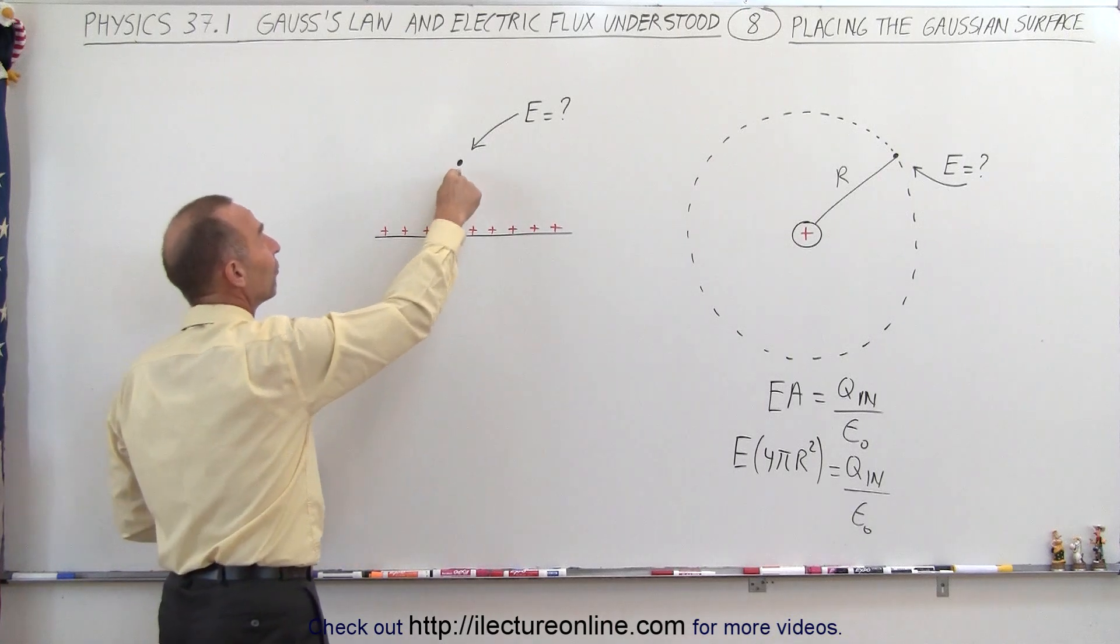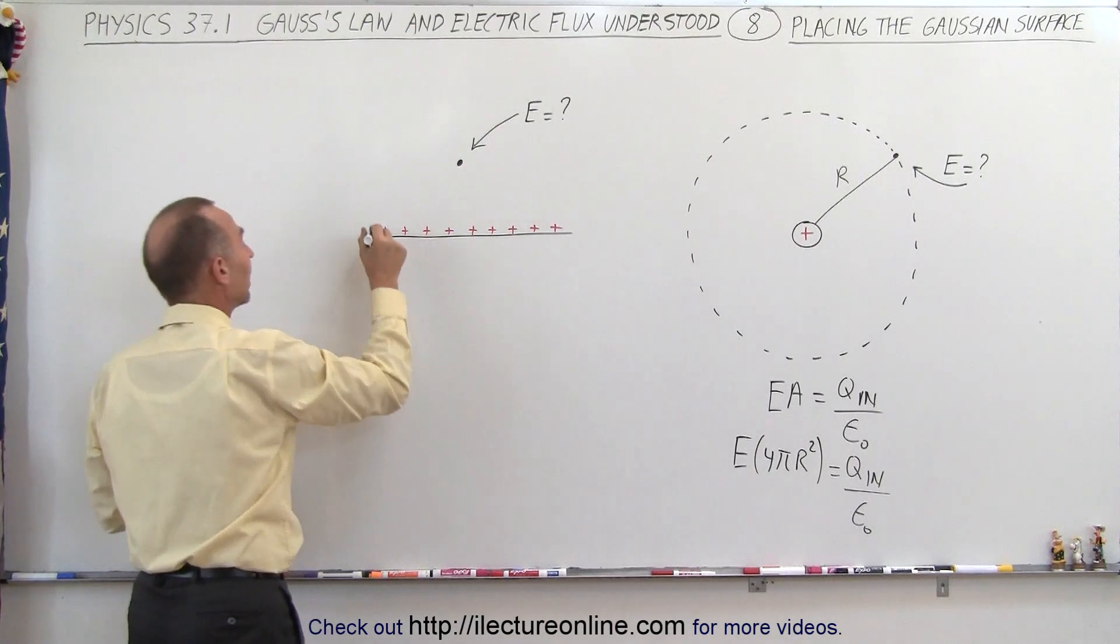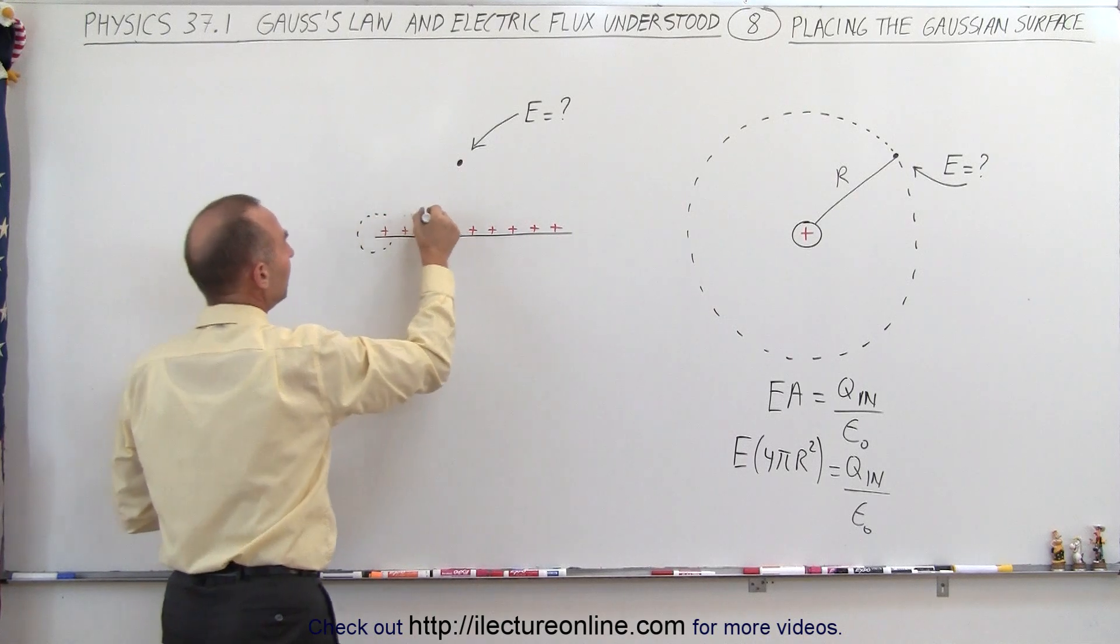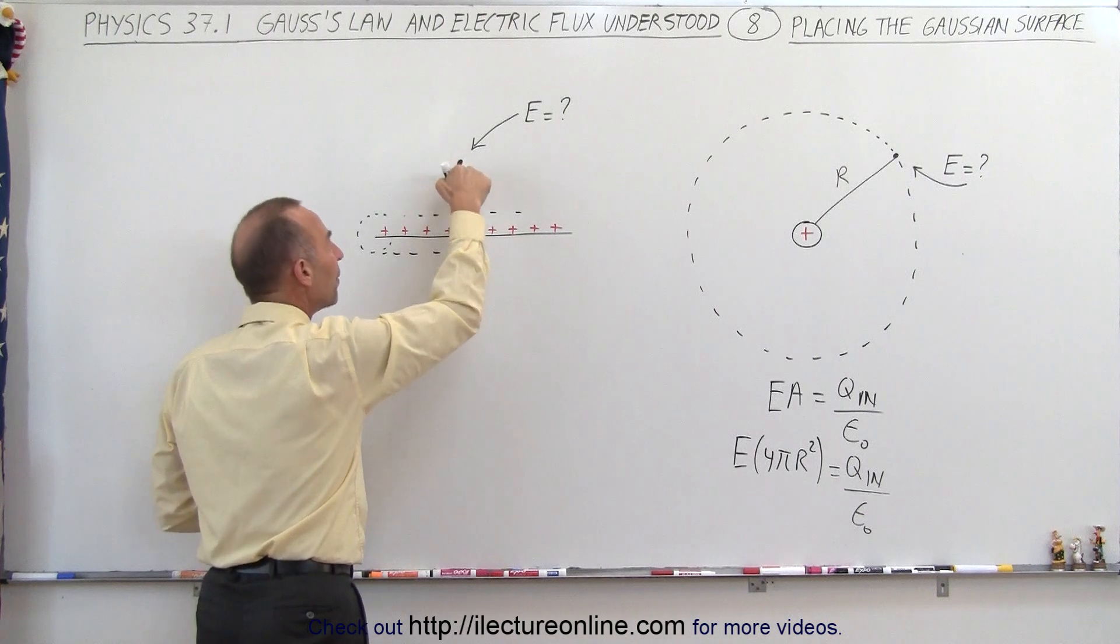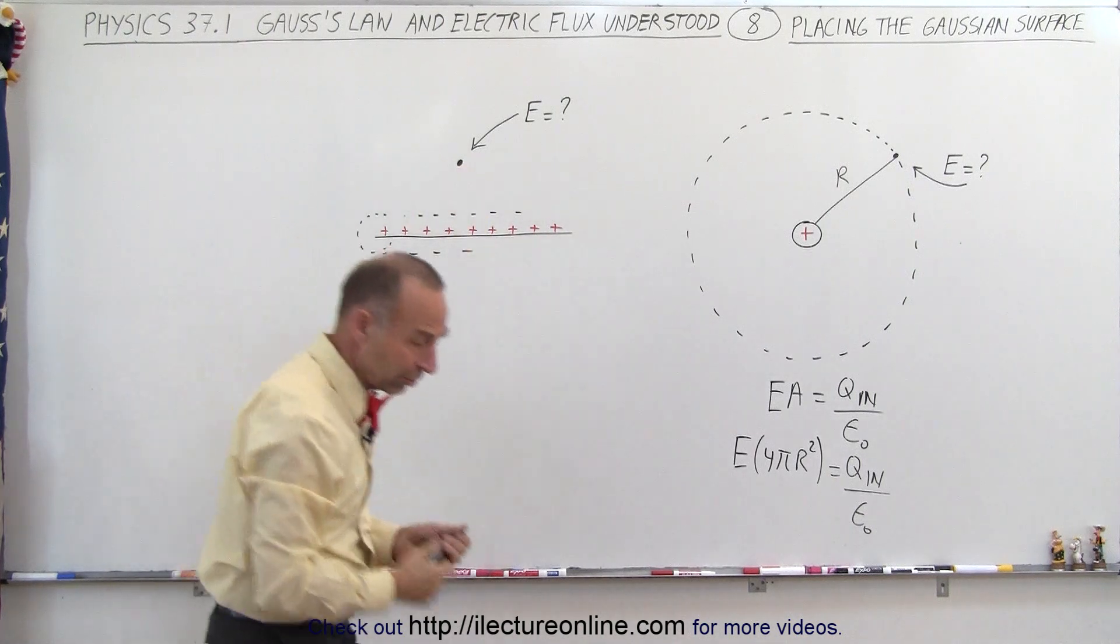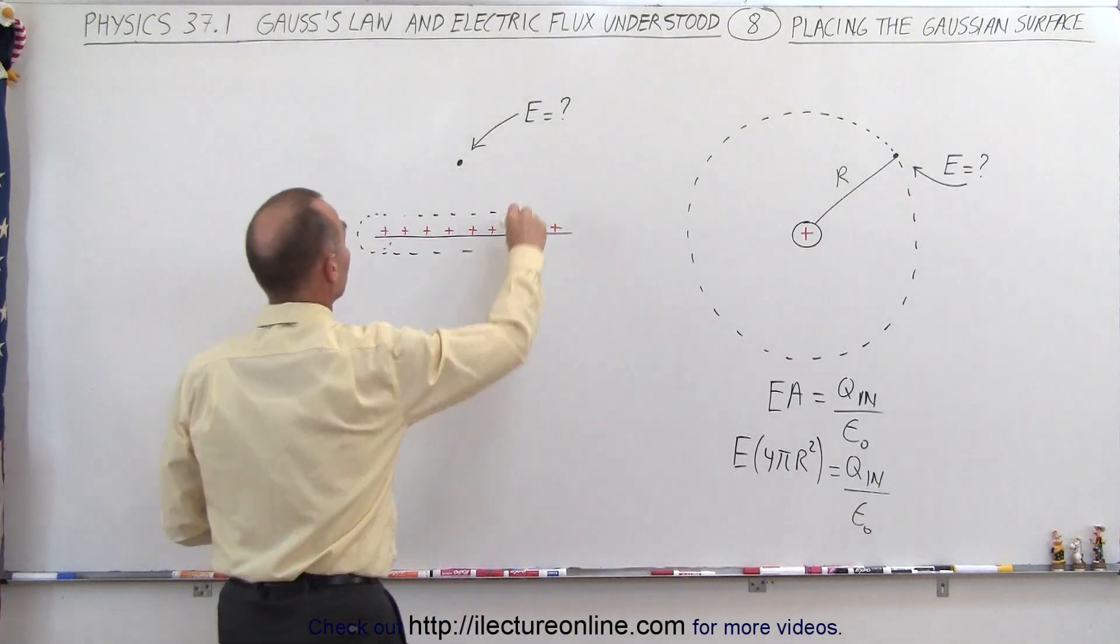The same with a linear charge distribution. If I want to know the field strength there, and I draw a Gaussian surface that looks like this, that's not going to help me because the Gaussian surface must go through the point of interest. So that's not a good choice for a Gaussian surface.